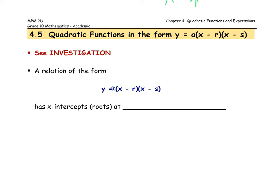A relation in factored form will always have roots at x equals R and x equals S. Now you need to know this is a simplified form — if it doesn't have the form x minus R and x minus S, in other words if there's a coefficient beside x that is not 1, then this does not hold true, and that's something we'll visit later in the unit.